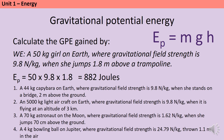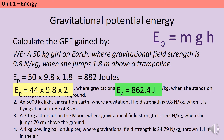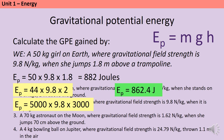Pause the video and have a go at answering the next four questions yourself. For each question we're multiplying mass by gravitational field strength by height, watching out each time to make sure mass is in kilograms and height is in meters. For question one: 44 × 9.8 × 2 gives 862.4 joules. For question two the height has been given in kilometers, so three kilometers becomes 3000 meters: 5000 × 9.8 × 3000 gives 147 million joules.